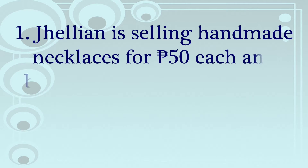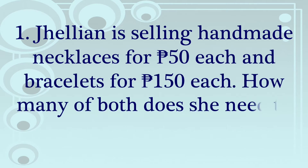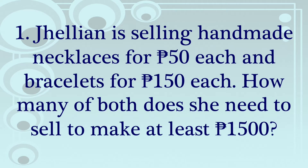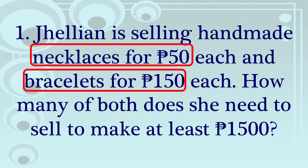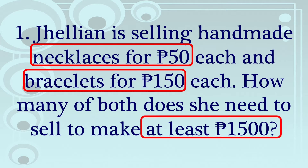So let's have number one. Jillian is selling handmade necklaces for 50 pesos each and bracelets for 150 pesos each. How many of both does she need to sell to make at least 1,500 pesos? So i-box natin yung mga given: necklaces, bracelets, and at least 1,500.